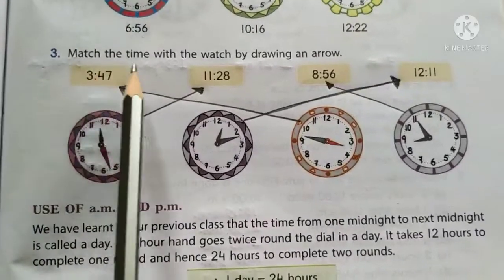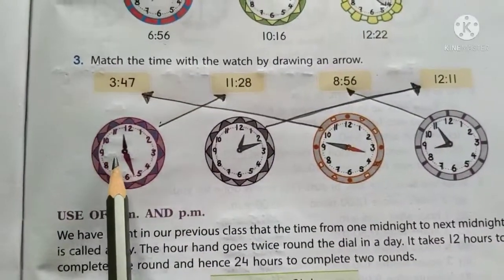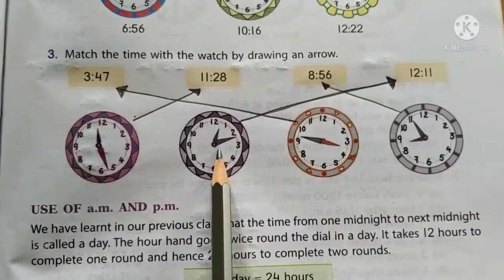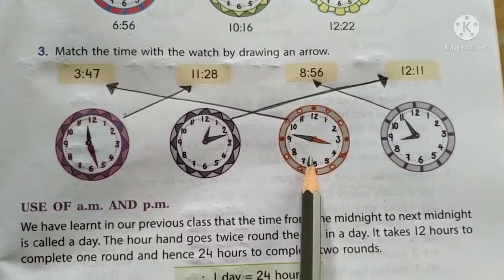Question 3. Match the time with the watch by drawing an arrow. So here the first clock is showing the time 11, 28. The second clock is showing the time 12, 11.